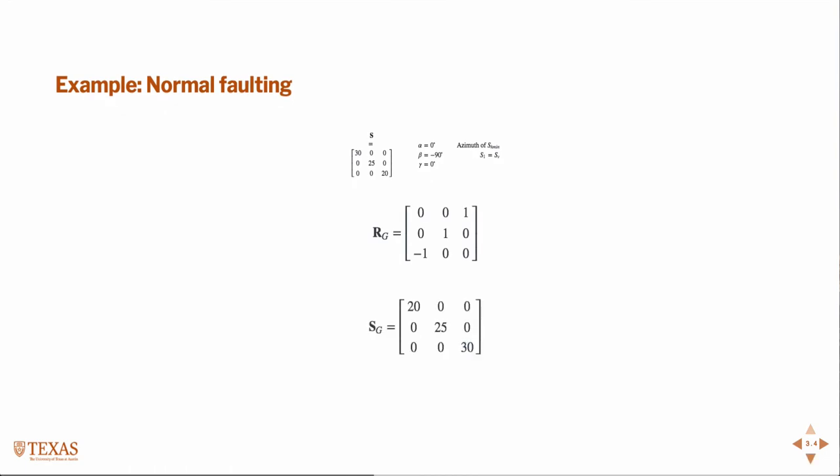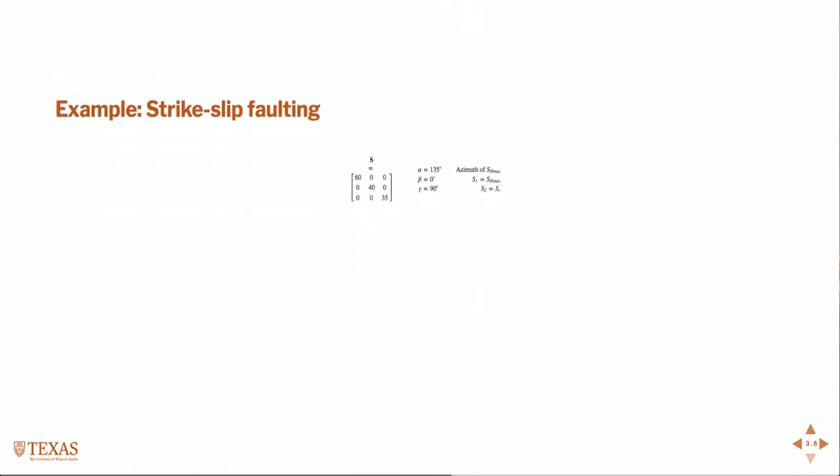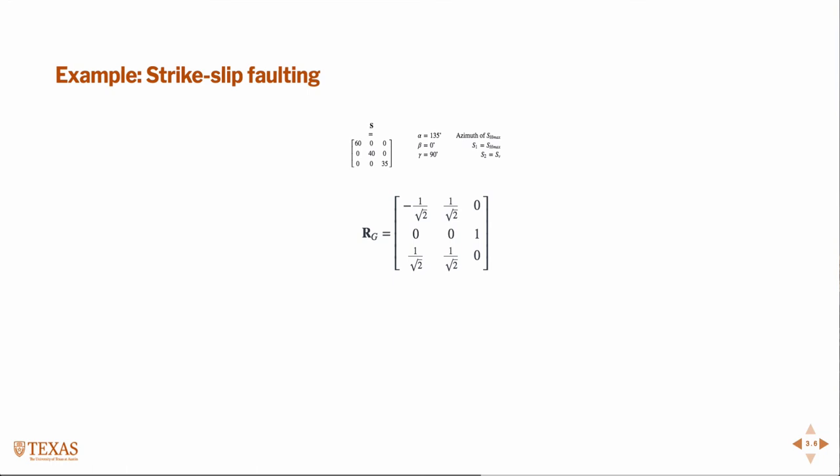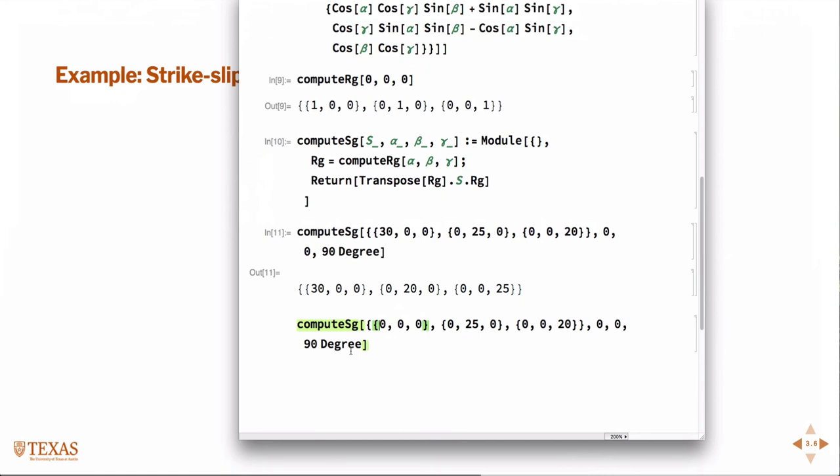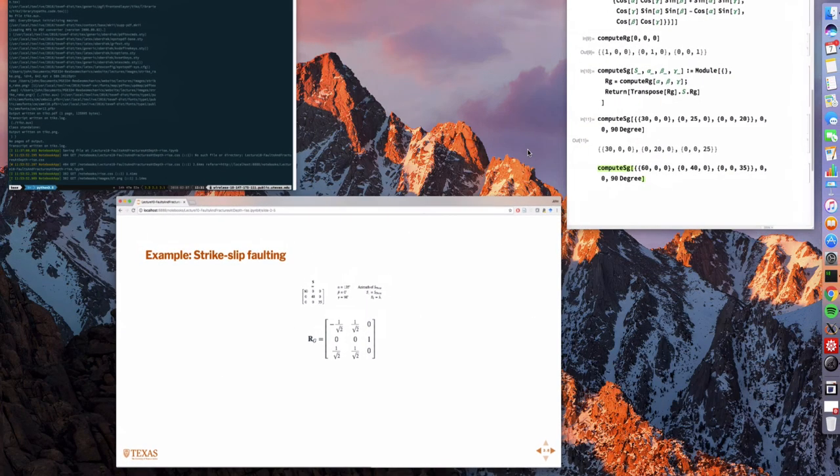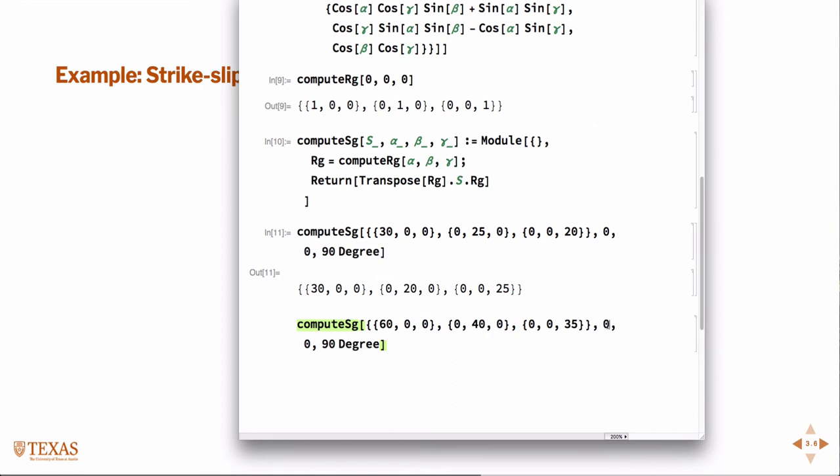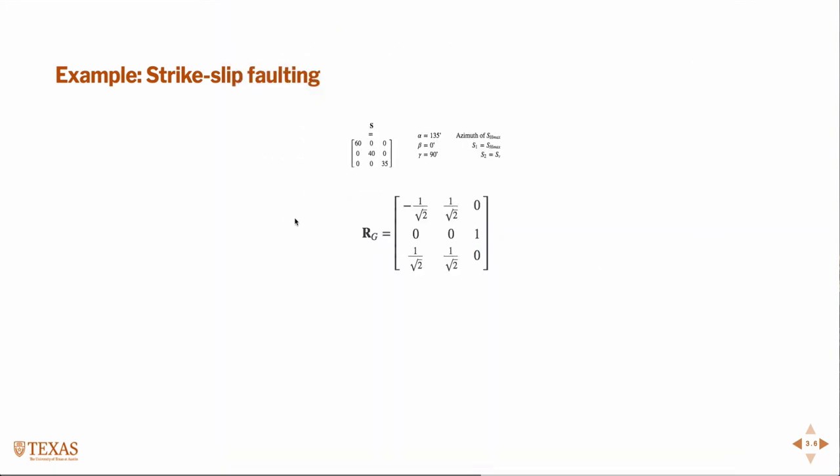So again, just for completeness, and to convince you guys that my code is correct, let's look at this case of strike slip faulting. We're 60, 40, 35, and the angles are 135, 0, 90. And there's our SG, and there's the answer, right?